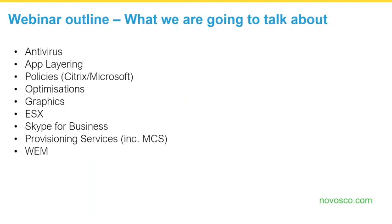For an outline of what we're going to cover today: best practices and tips around different products, such as antivirus, app layering, policies from both Citrix and Microsoft, optimizations, graphics, ESX, Skype for Business, PVS (Provisioning Services), MCS (Machine Creation Services), and WEM, which is Workspace Environment Management.